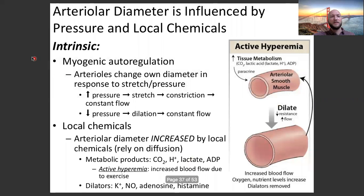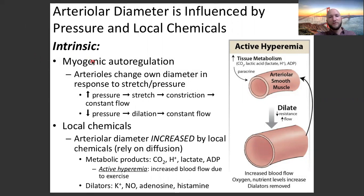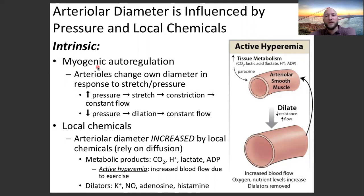Let's look at the intrinsic mechanisms first — intrinsic mechanisms that control TPR. Arteriolar diameter is influenced by pressure and local chemicals. Myogenic autoregulation: breaking the word down, 'myo' means muscle, 'genic' means coming from the muscles within the arterioles, and 'autoregulation' means self-regulation. Arterioles change their own diameter in response to stretch and pressure.